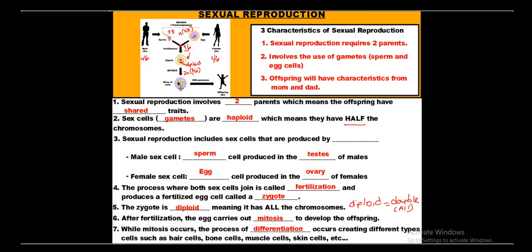Differentiation is the event where all the cells start to become different types of cells. To become an offspring you need cardiac muscle cells for the heart, bone cells for a skeleton, nerve cells, blood cells, skin cells, and muscle cells — so all these cells differentiate, meaning they become different cells. To summarize: two parents contribute gametes; the sperm and egg meet in fertilization; the haploid gametes combine into a diploid zygote; then mitosis creates many new cells which differentiate to create the offspring.